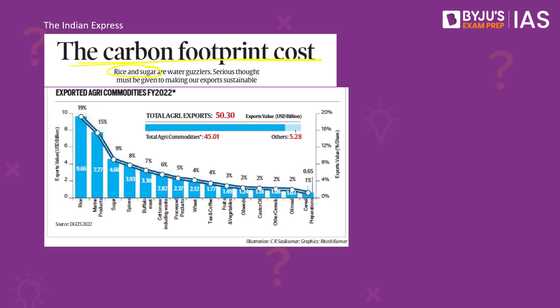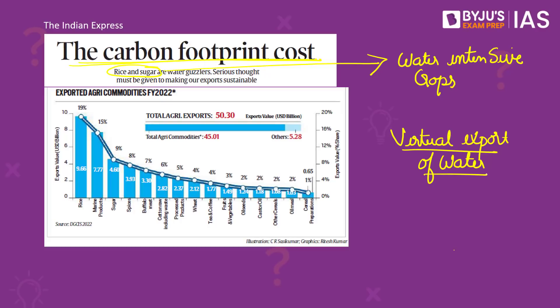Rice and sugar are very water-intensive crops. The article points out record exports of rice as well as sugar from India, but expresses concern that the export of such water-intensive crops amounts to the virtual export of water. The article warns this is not good or sustainable for a country like India, which faces the problem of water insecurity, and argues for a more sustainable approach to agri-exports from India.